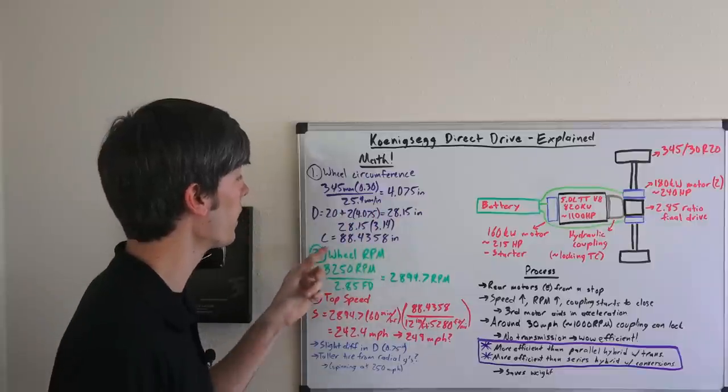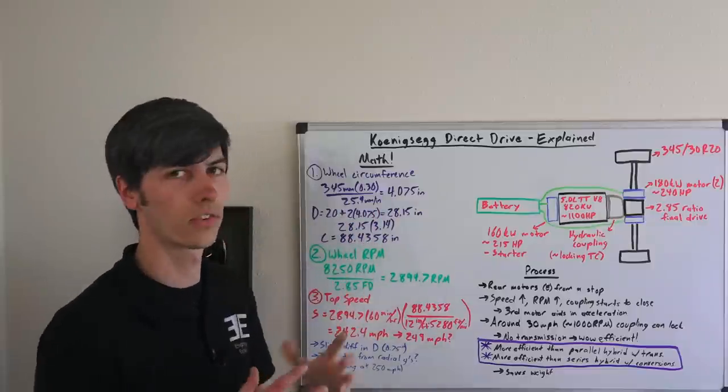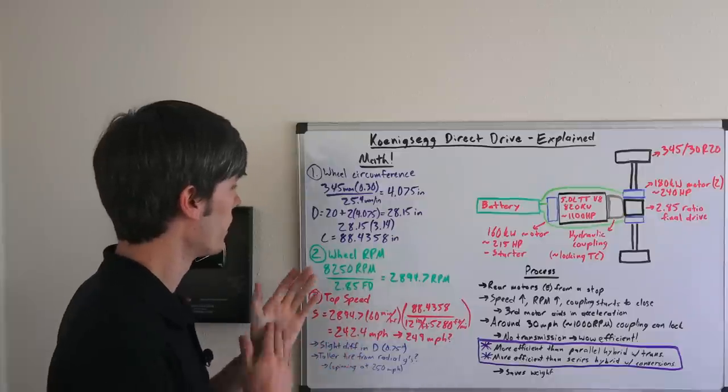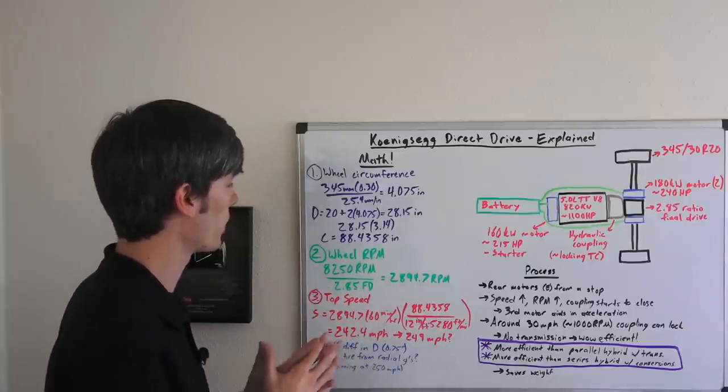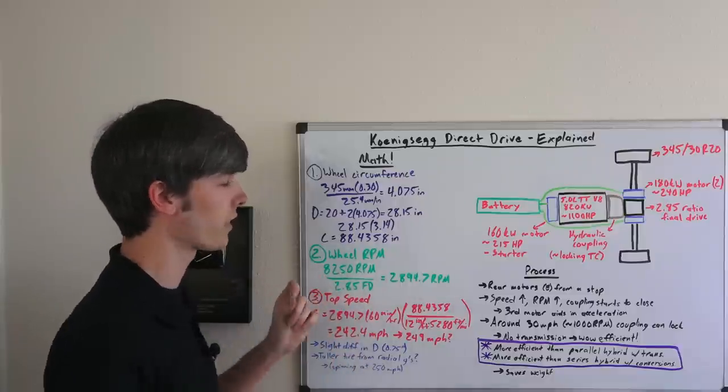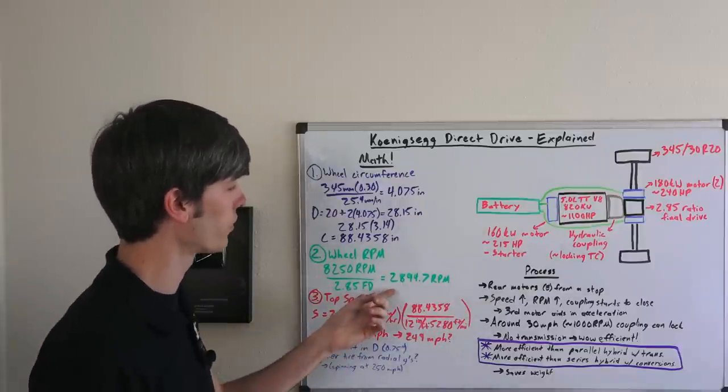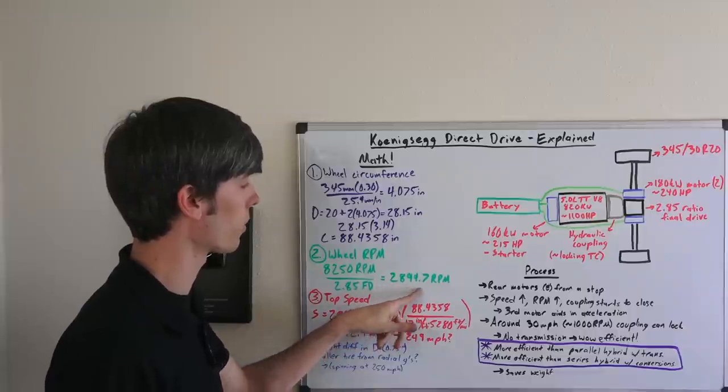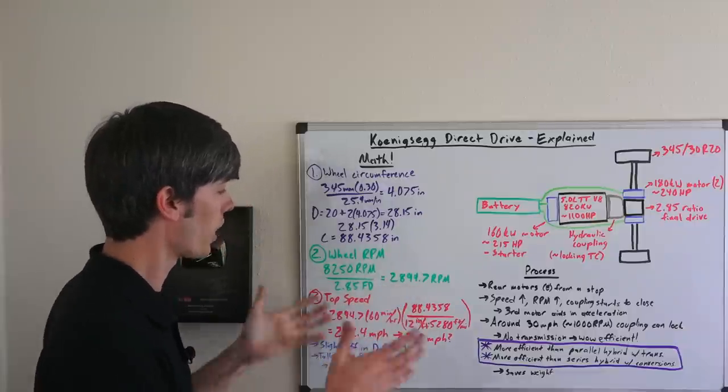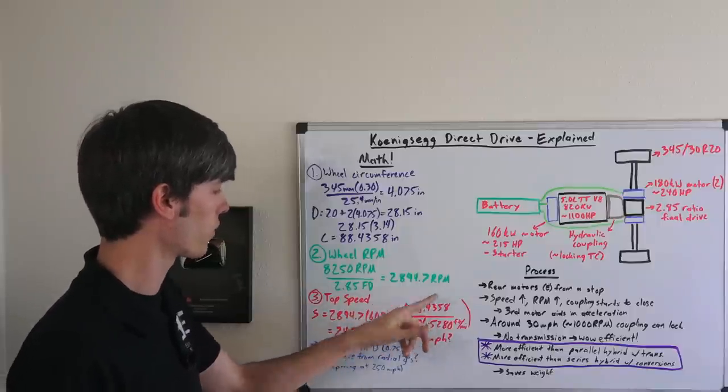So we multiply that by pi and we get 88.4358 inches. That's the circumference of this tire. Now let's find out what the wheel rpm is. So we know that our engine rpm red line is 8250. So we simply divide that by the final drive ratio that gives us 2,894.7 rpm. So now we can find out what our top speed is. So speed is equal to this number here, this rpm...